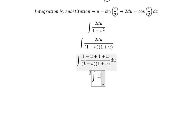Next 1 minus u divide 1 minus u will get 1 over 1 plus u. And we have 1 plus u divide 1 plus u will get 1 over 1 minus u du.